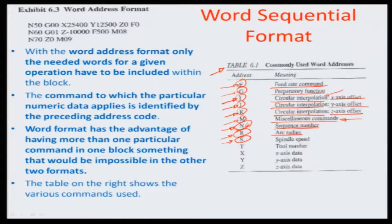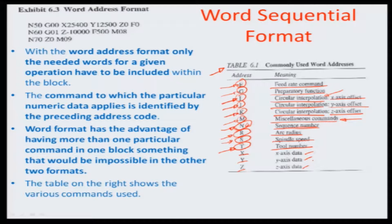S stands for the spindle speed, and T is the tool number. There are many tools in the CNC system, and there is also a tendency for the CNC system to pick and choose certain tools and sequence one operation followed by another. The X, Y, Z data represents the coordinates read on a drawing where the tool has to access, or from one place to another that the tool has to traverse on the drawing.